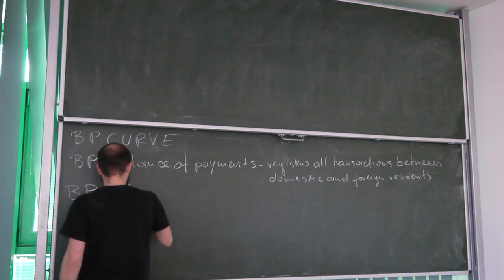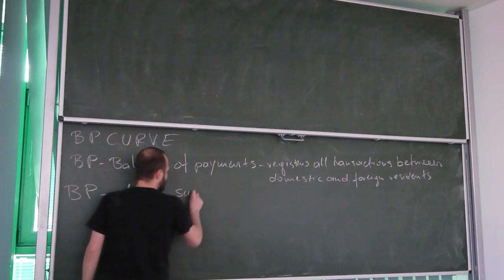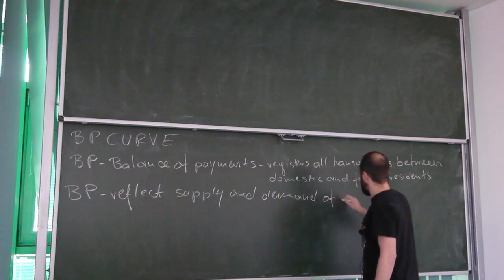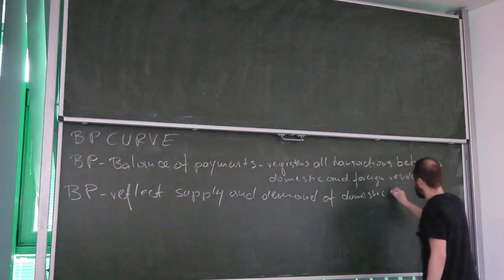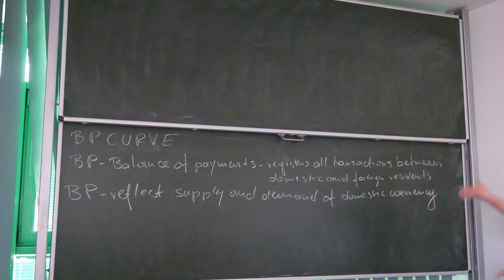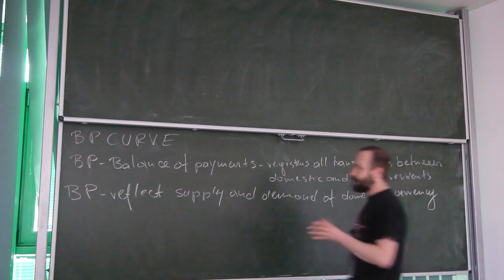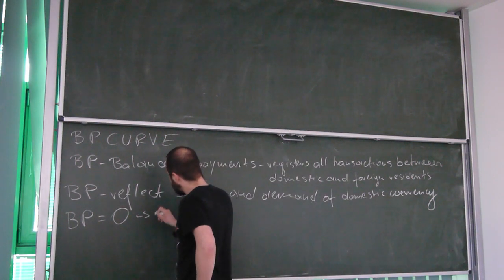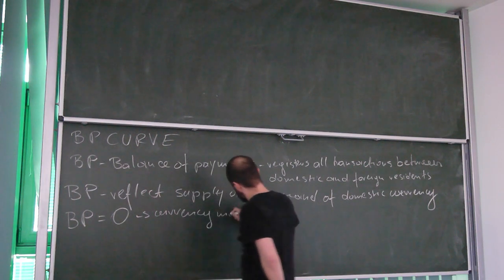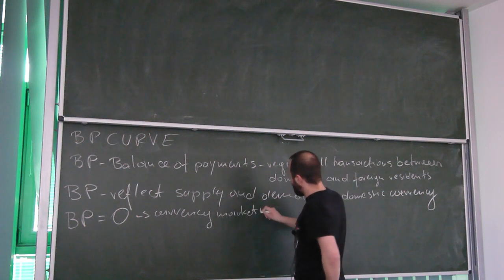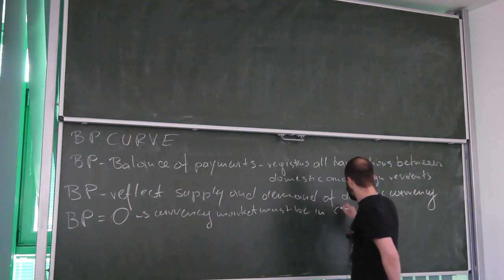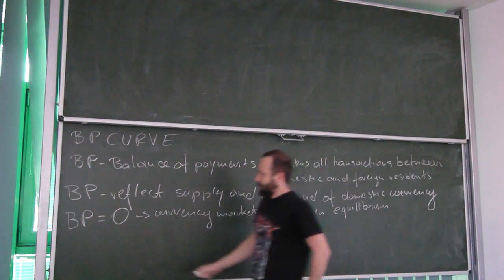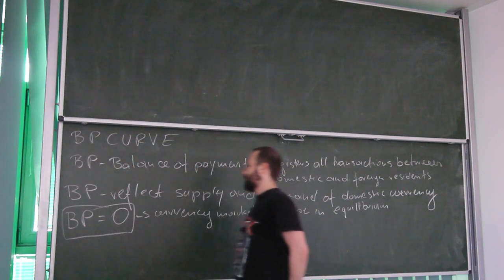Balance of Payments reflects supply and demand of domestic currency. As such, we can easily deduce that if Balance of Payments is exactly at zero, the exchange rate market must be in equilibrium. So this is the first information we're going to use — this is going to be our equilibrium condition.